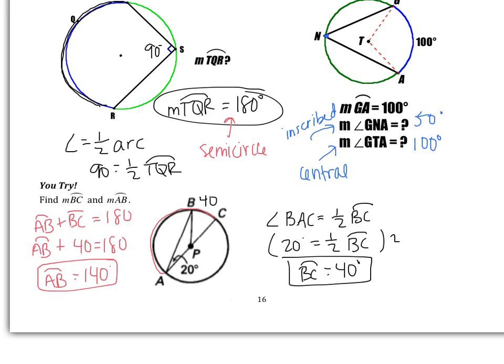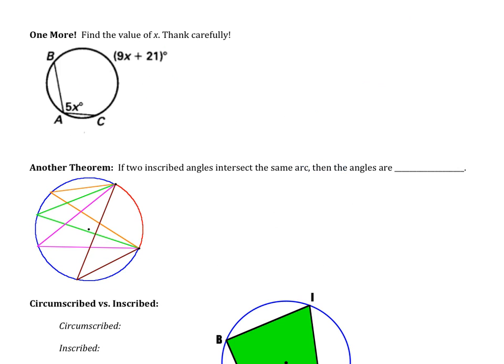So hopefully that went well. If not, hopefully you now see what mistake you made. We have one more example before we're going to move on to another theorem. Here's the example. It's similar, except we have variables now instead of just plain old numbers. You are asked to find the value of X. You need to remember that the angle is one half of the arc. Pause the video and try this one on your own, please. Good luck.